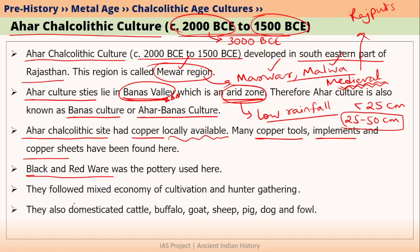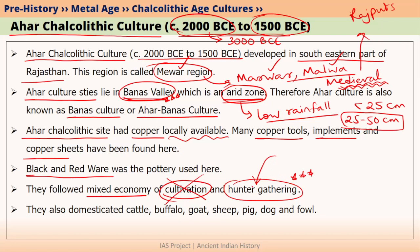Ahar Chalcolithic culture people followed a mixed economy, which was basically a mix of cultivation of plants as well as hunting and gathering for their food. This is a very common feature in all Chalcolithic sites, because Chalcolithic people were not completely dependent on cultivation of plants — they also did hunting and gathering, as well as rearing of animals.